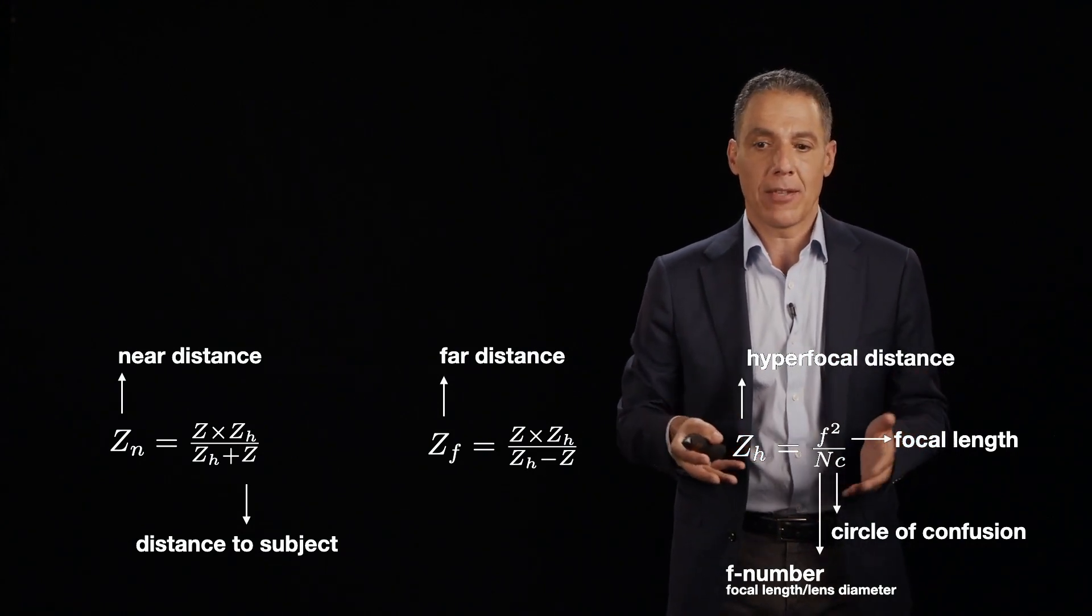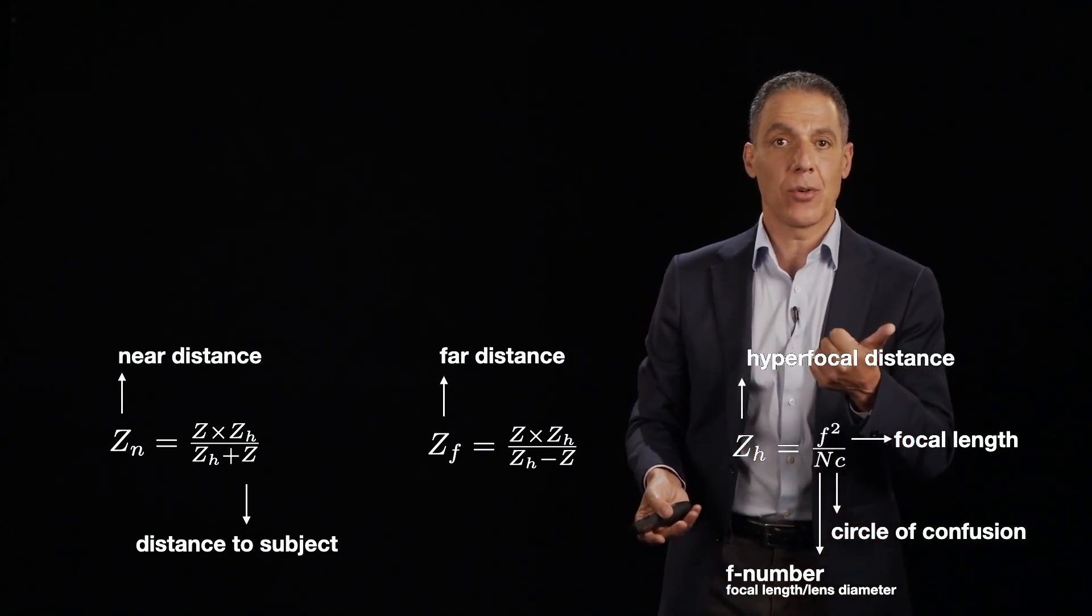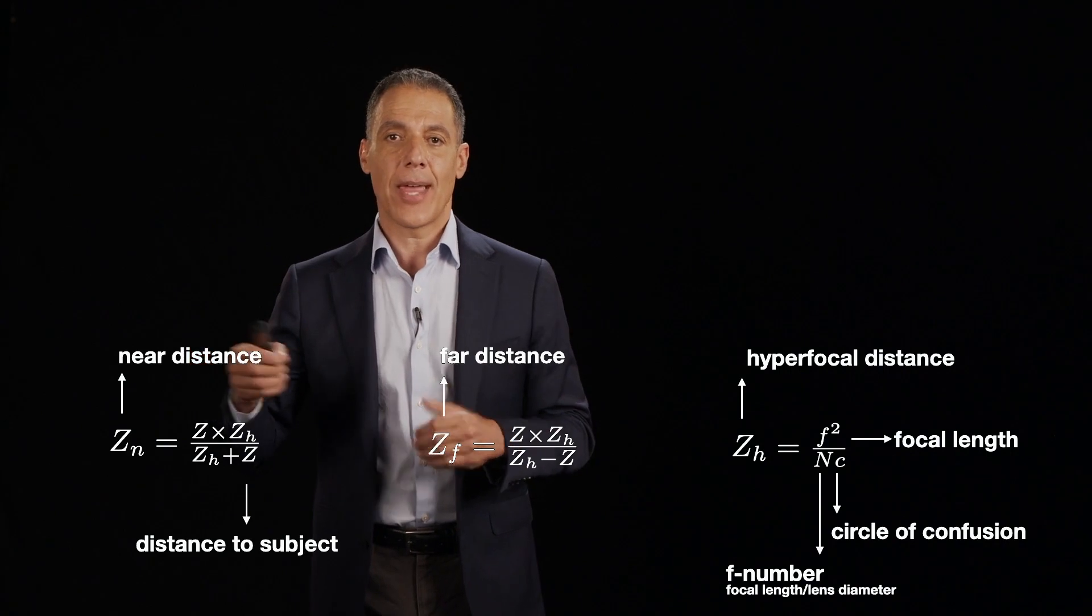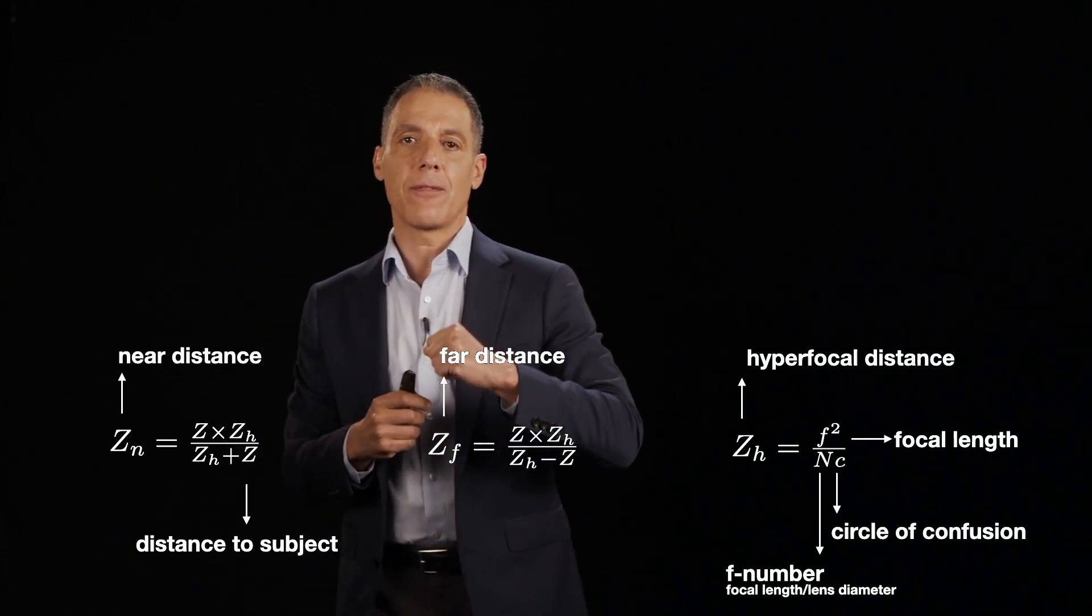Now, once I know this hyperfocal distance, which I can determine by just telling me what the focal length and the F-number is ratio of focal length to lens diameter, I can then tell you what your range of focus will be. And I'm going to quantify that by two things. What is the point of a near distance? So that is, what is the closest thing that will be in focus? And what is the point of far distance? What is the furthest thing that will be in focus?